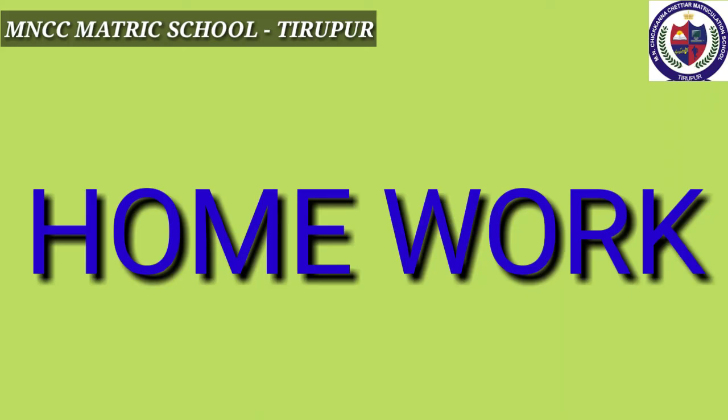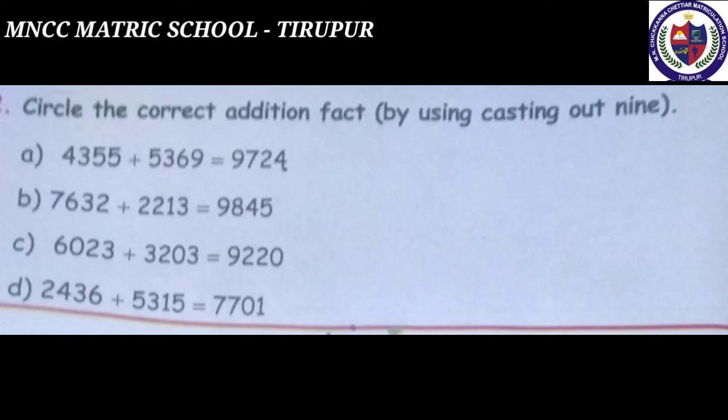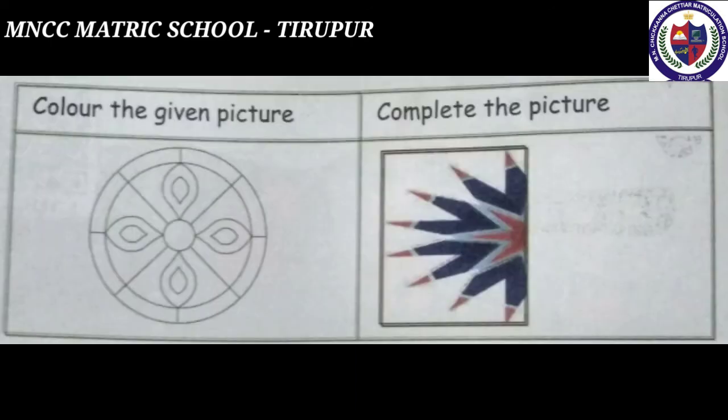Homework: circle the correct addition fact using the casting out 9s method, color the given picture, and complete the picture. In the next video, we will learn about multiplication and division using the casting out 9s method. Thank you.